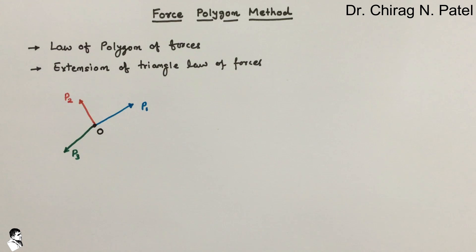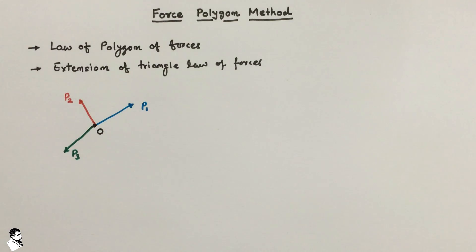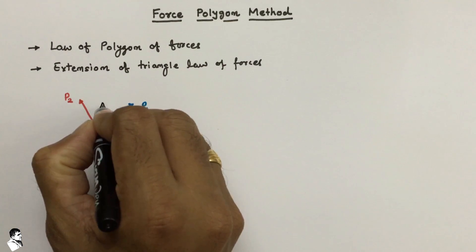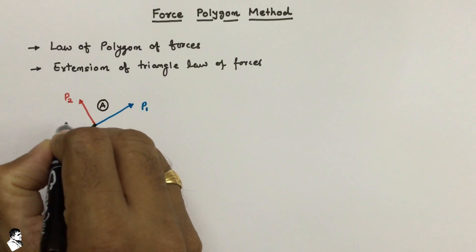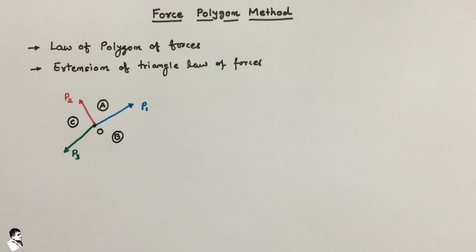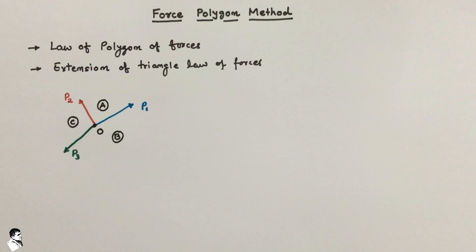The solution of this system is given by a graphical method. The force polygon method is generally known as one type of graphical method. Considering the notation with points A, B, and C, forces P1, P2, and P3 are all acting on particle O. We then make a force polygon which defines different sides in terms of the forces.